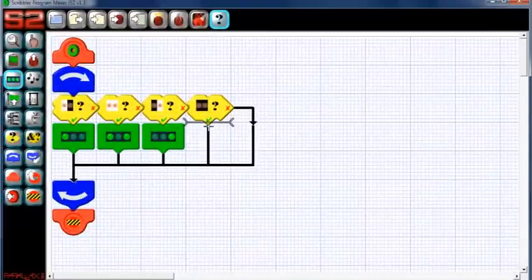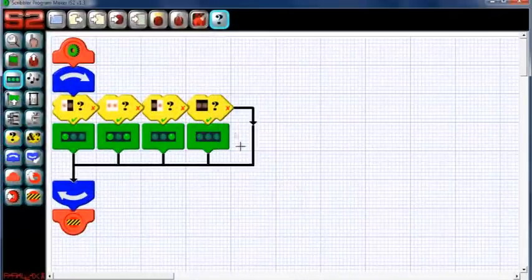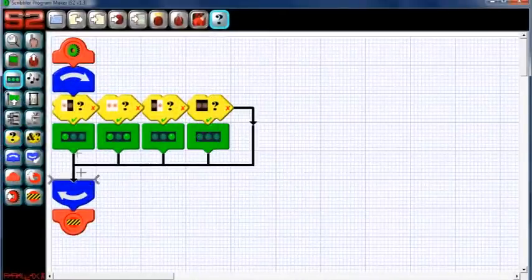If both sensors are over a black surface. If this is true, we'll turn both LEDs off. If this is false, we won't do anything and just start the whole monitoring process again.